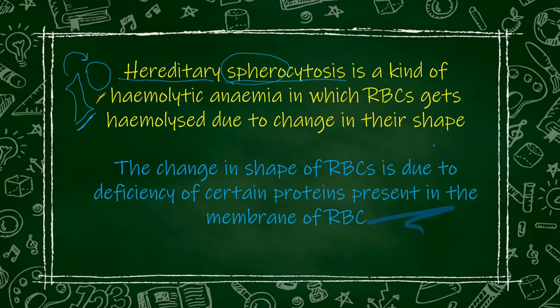But when the RBC converts into a spherical shape, the flexibility of its membrane decreases. Due to decreased membrane flexibility, as soon as it tries to pass through the spleen's capillaries, its breakdown begins. And this is why hereditary spherocytosis is a type of hemolytic anemia — due to change in shape of the RBC membrane, it cannot easily pass through the spleen's capillaries and gets destroyed, causing anemia.